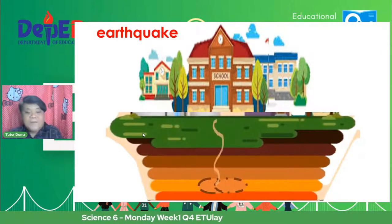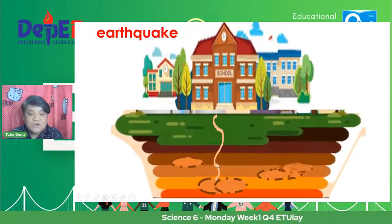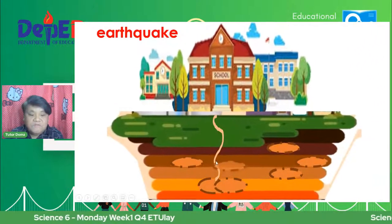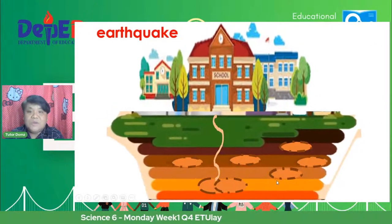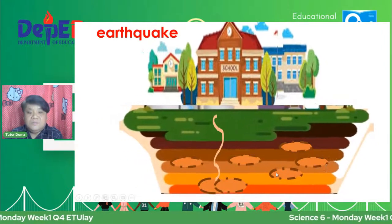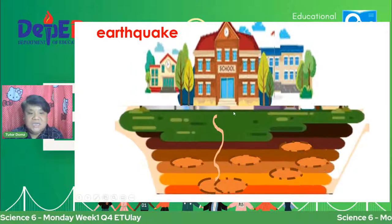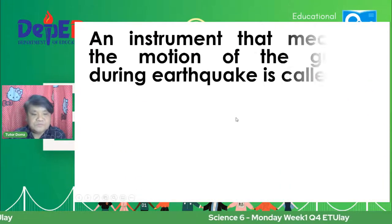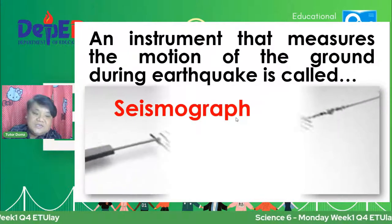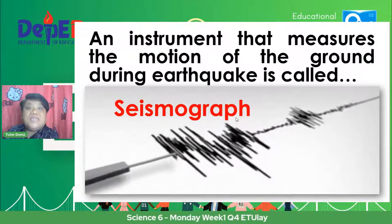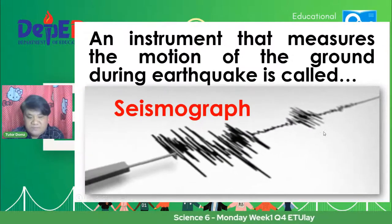There is an instrument that measures the motion of the ground during an earthquake. Ang tawag natin dyan is the seismograph. Yan yung pagsukat ng pagyanig sa atin. Noong nakaraang linggo lang nagkaroon ng pagyanig sa atin — sinukat siya using the seismograph. So there are two types of earthquake. The first one is what we call the tectonic earthquake, and the second one is the volcanic earthquake.